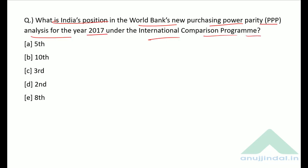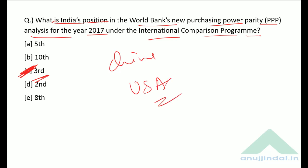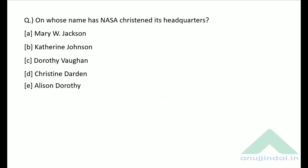What is India's position in the World Bank's new Purchasing Power Parity analysis for the year 2017 under the International Comparison Program? India's position is number three. Number one is China and number two is the USA.